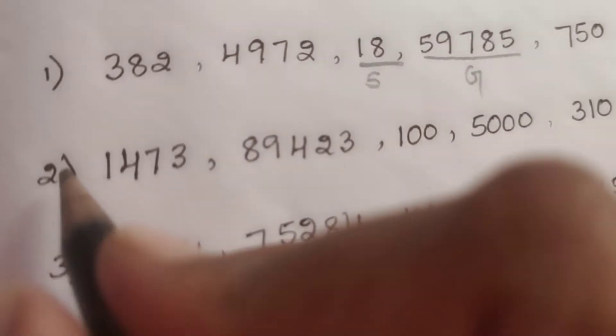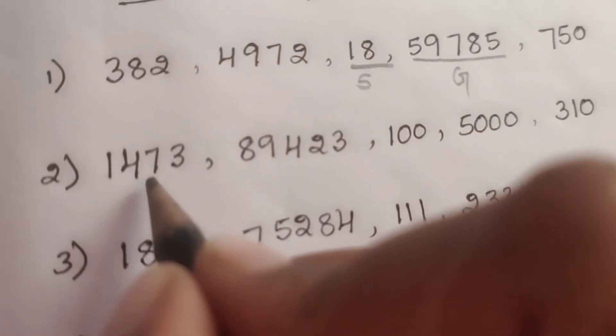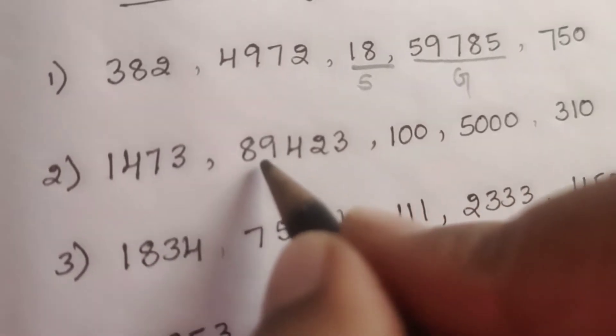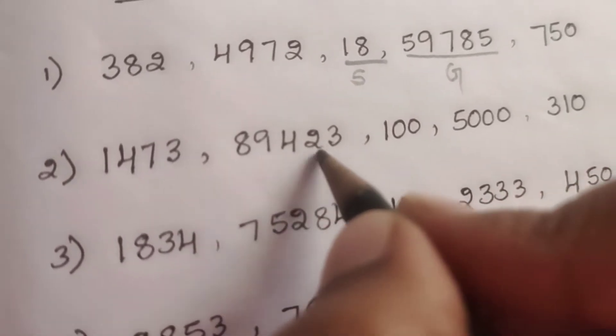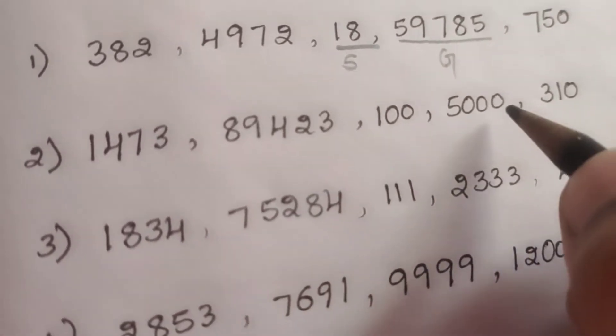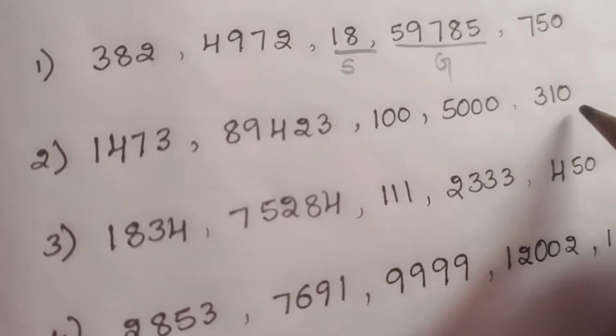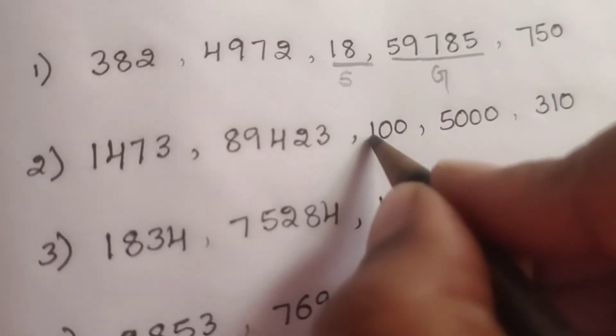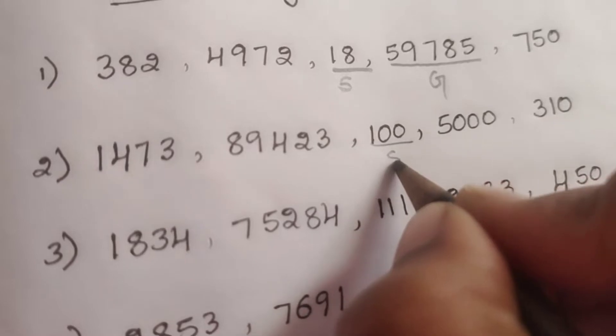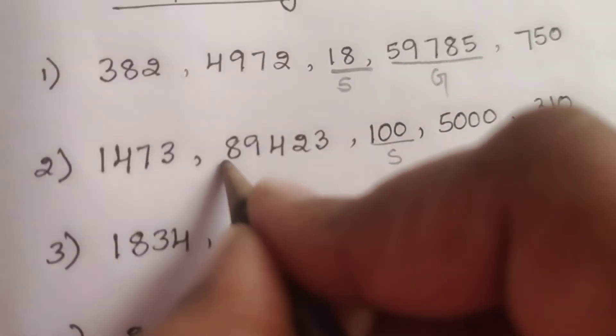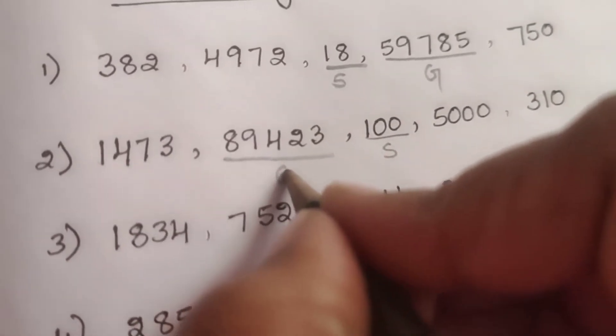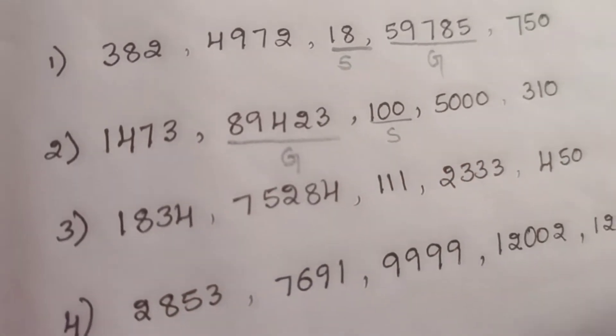Let us see the second one: 1473, 89,423, 100, 5000 and 310. Here 100 is the smallest number and 89,423 is the greatest number.